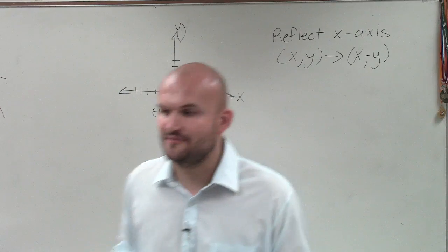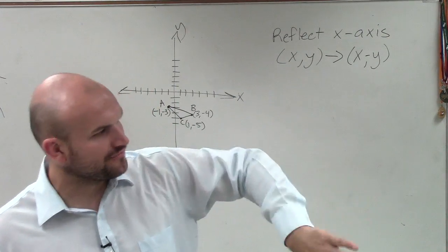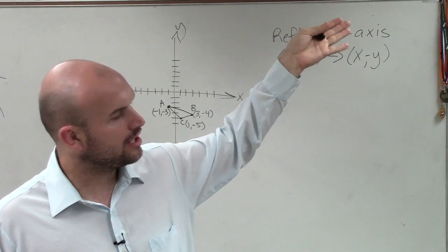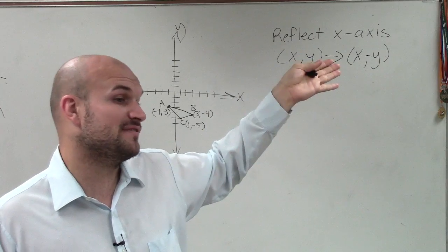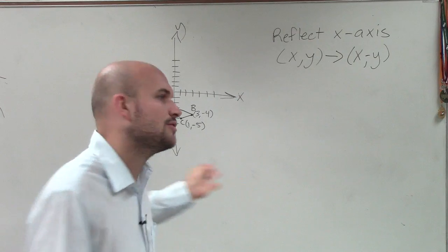Because when you reflect a figure, the x-coordinate does not change. You're just reflecting it up into the y-axis, or above the x-axis. Or if you're already above the x-axis, you're flipping it down below. So the only thing that's changing is the y-coordinate.